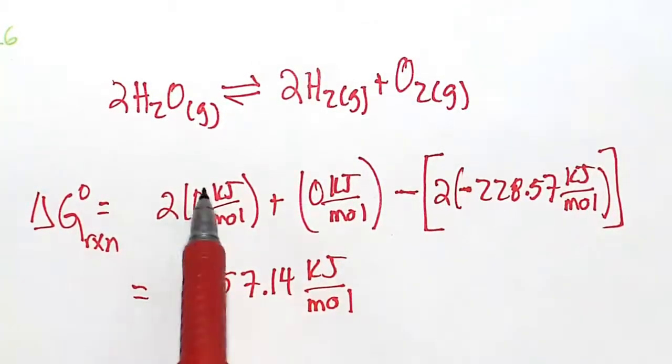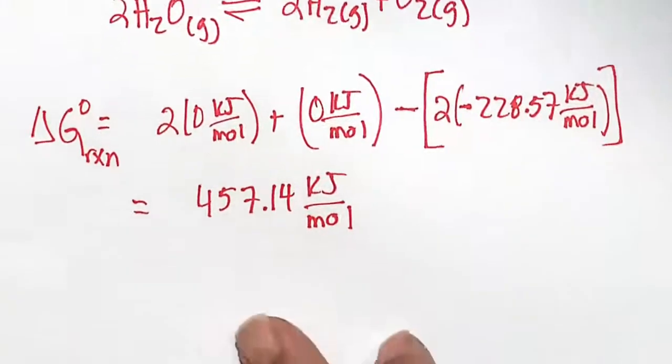Positive sign tells you this reaction is no-go unless you input some energy, so we call that an endergonic reaction. Let's go ahead and find the Kp and solve this problem.